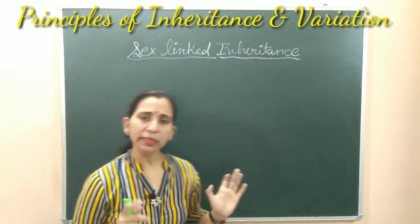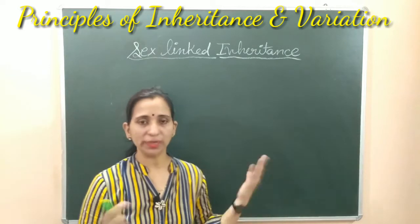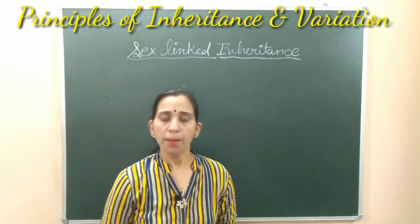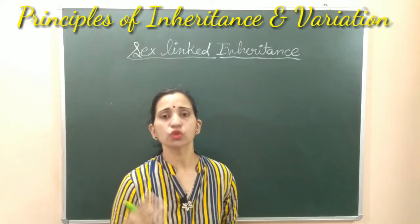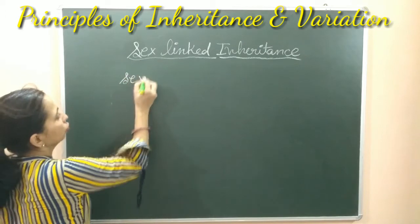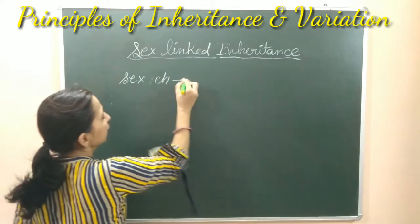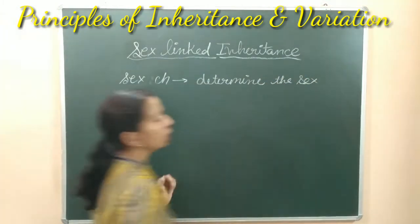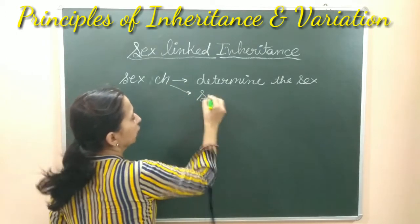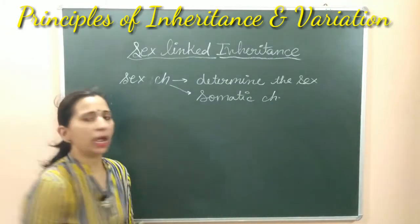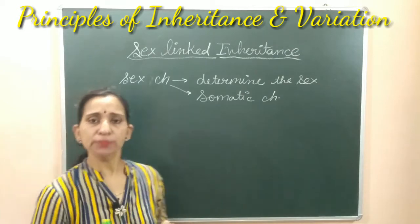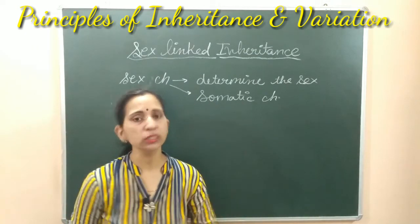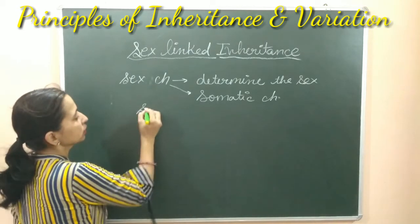In each individual, sex chromosomes are found, and these chromosomes determine the sex of an individual. But besides determining the sex, this sex chromosome also controls some somatic characters. These somatic characters are controlled by some specific genes which are found on the sex chromosomes, and these genes are known as sex linked genes.